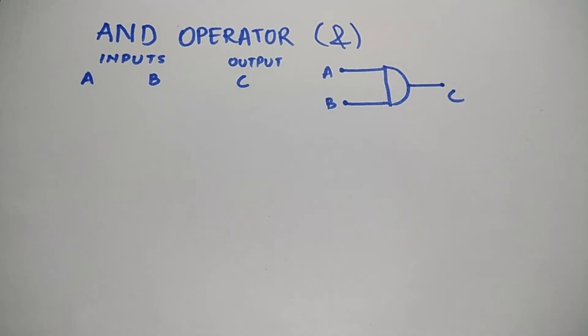The AND operator — you can see its symbol shown in the bracket, which is used in embedded programming. There are two inputs, A and B, and one output. In the AND operator, if either of the inputs is low then the output is low, or we can say that if both inputs are high then the output is high.